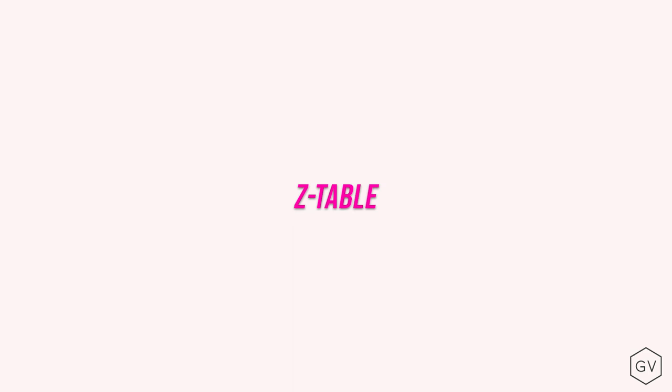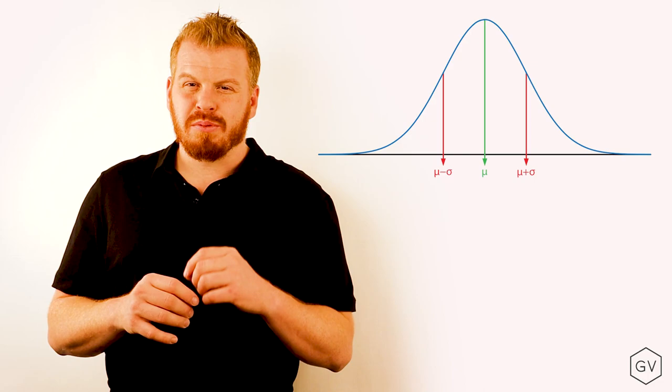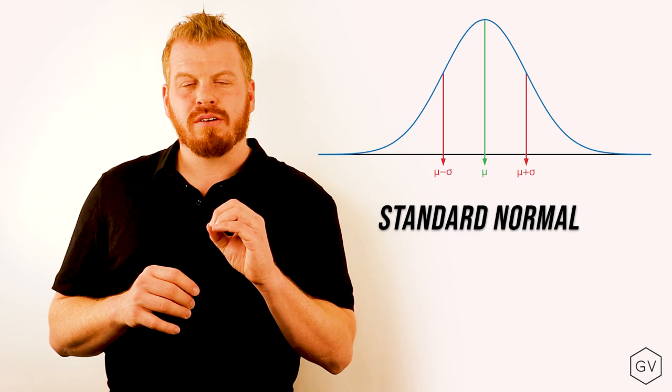When we're talking about normal distributions, the standard normal distribution is especially important. The standard normal distribution has a mean of zero and a standard deviation of one.